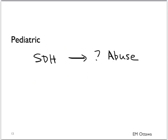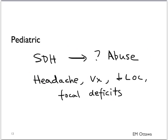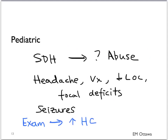In the pediatric population, diagnosis of a subdural hemorrhage should raise our suspicion for potential child abuse. Subdural hemorrhage in this age group will present with headache, vomiting, decreased level of consciousness, or focal deficits. They can also present with seizures. On examination, the patient might have an enlarged head circumference or bulging fontanelles. They may also present with failure to thrive. We need to look for any other signs of child abuse if subdural hematoma is being diagnosed.